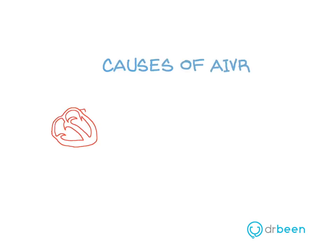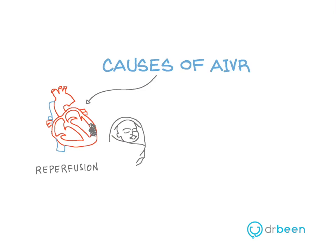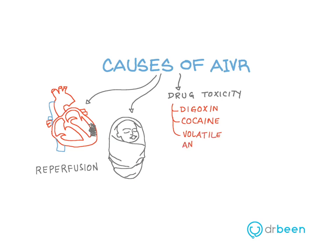AIVR is triggered most commonly by reperfusion after a myocardial injury. It can also be seen occasionally in infants and children, usually indicating the presence of AIVR since birth. Other causes that can trigger an ectopic pacemaker in the ventricles leading to AIVR include drug toxicity, such as digoxin toxicity, cocaine, and volatile anesthetics, including desflurane.